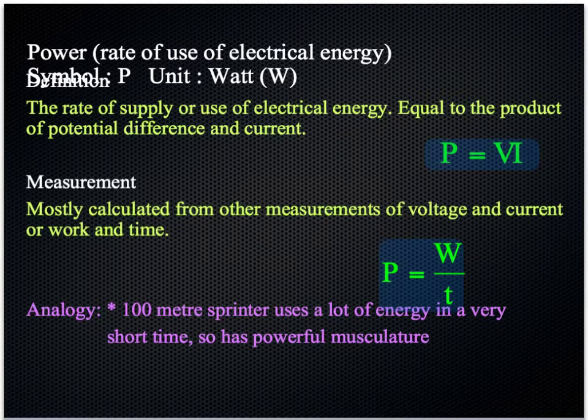The analogy for power, if you think about 100 metre sprinters, they use a lot of energy in a very short time, and so they must have powerful musculature. Compare them to an endurance runner, and you get a difference fairly obviously. Their musculature is not powerful at all.